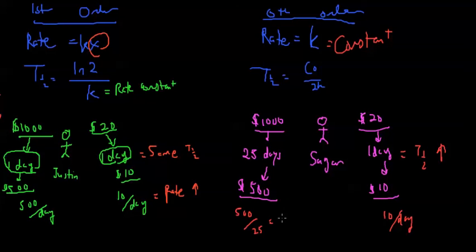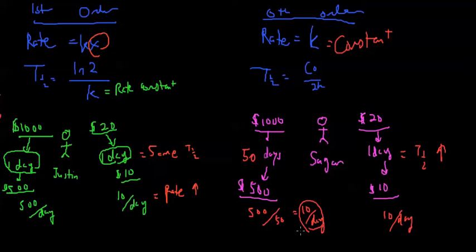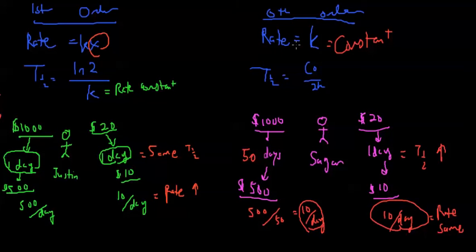Rate is a constant in zero order. If we divide $500 by 50 days, we get $10/day — the same rate as before. So rate is the same regardless of starting amount. We can see it's the opposite of first order: first order rate is dependent, so half-life is independent; zero order rate is independent, so half-life is dependent. If you memorize one, you'll memorize all of them.